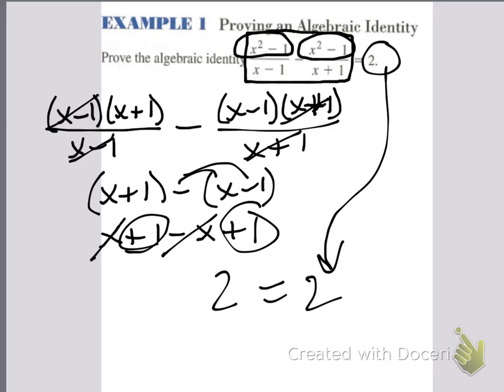So what you want to do is simplify the left side so that it looks exactly like the right side. That's proving an algebraic identity. All we had to do was factor the numerators, cancel, and then combine like terms.